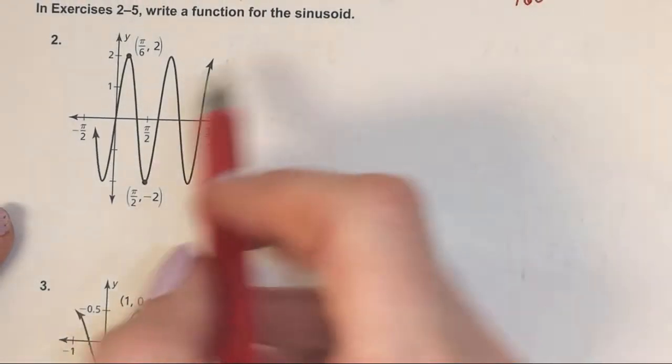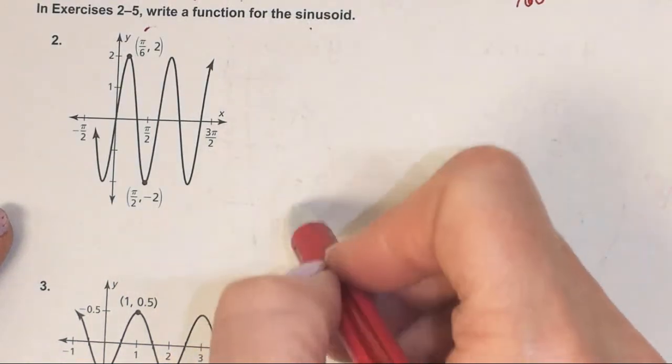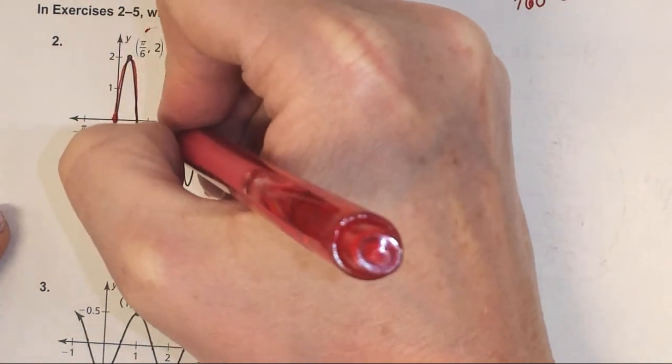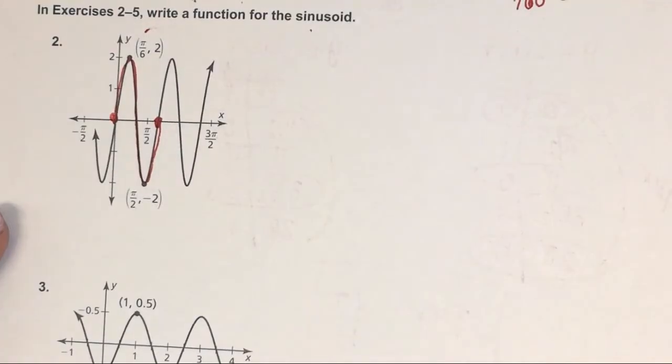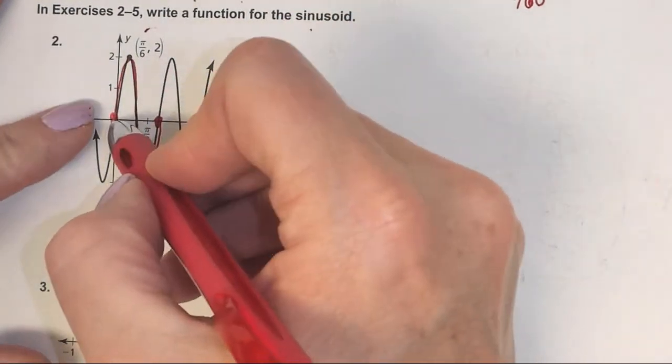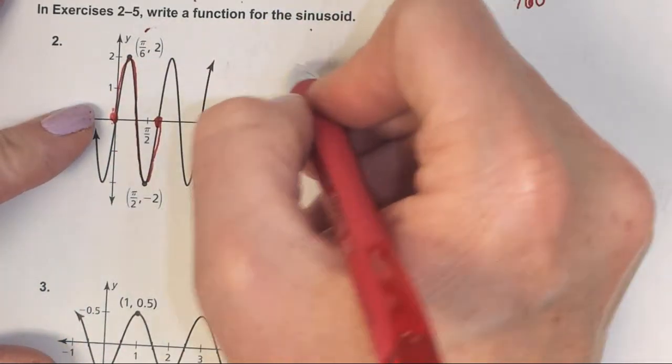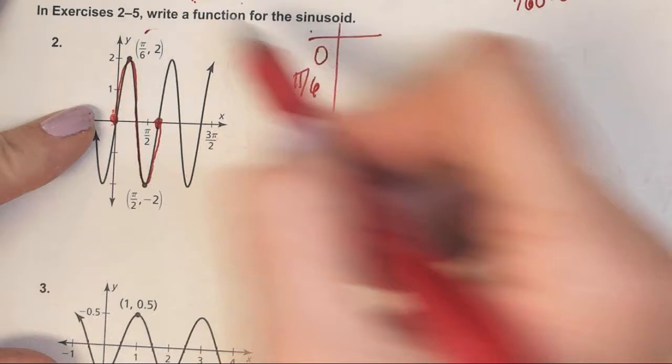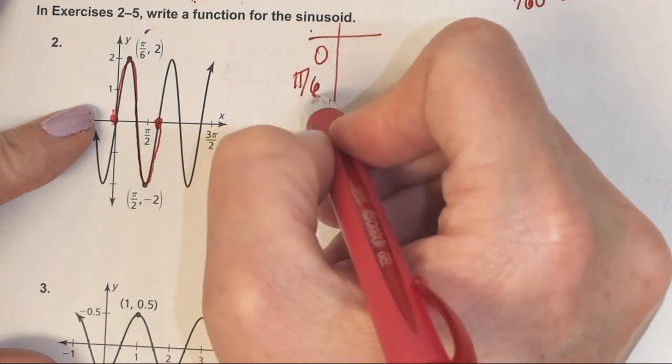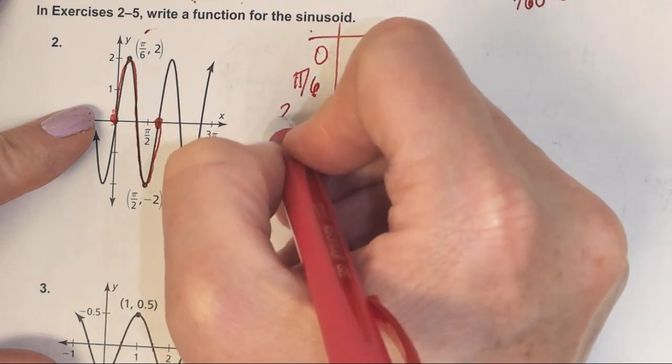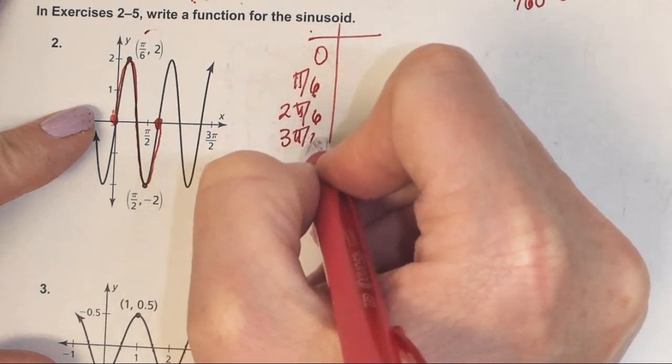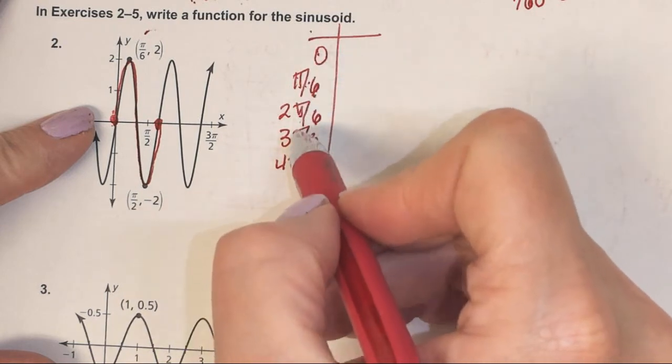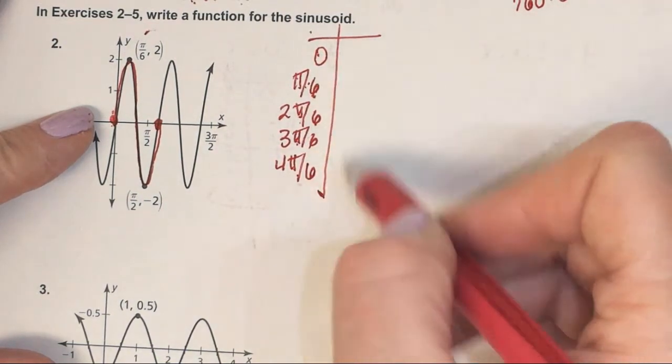Let's look at this one now. We're trying to come up with a function for the sinusoid. I don't want you to be dependent on the chart of values. Trace over top of this. That's one period right there. If this point to this point is π/6, I start at 0, go to π/6, and it has to be evenly spaced. Keep adding π/6: 2π/6, 3π/6, 4π/6. I have my five points.